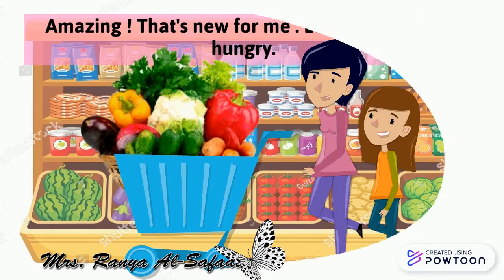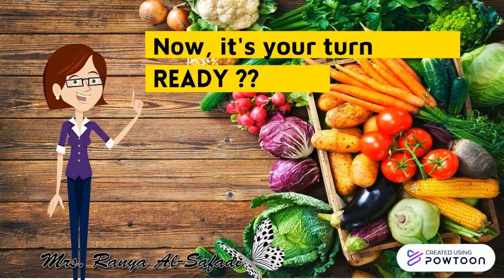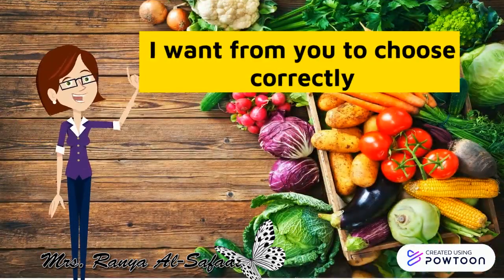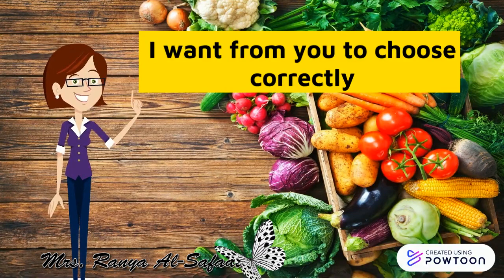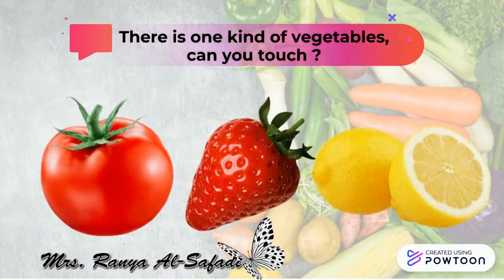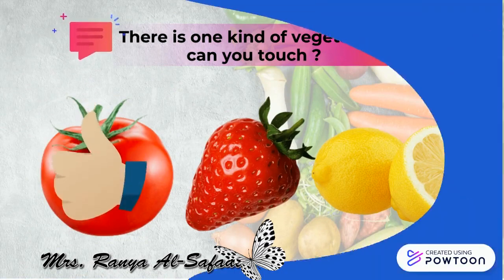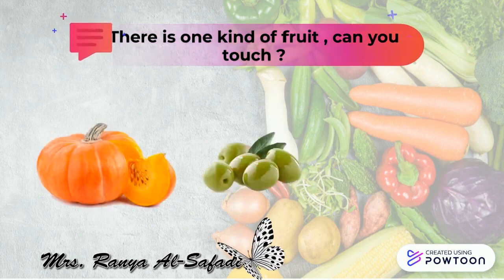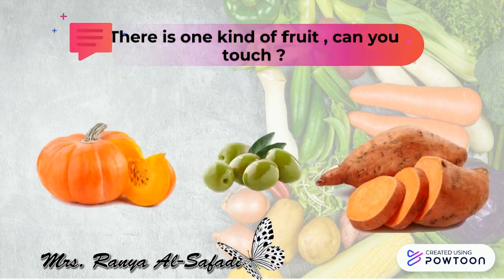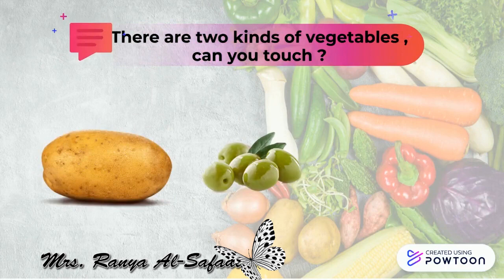Now it's your turn! I want you to choose correctly. There is one kind of vegetable — can you touch it? Tomatoes. There is one kind of fruit — can you touch it? Zaitun.